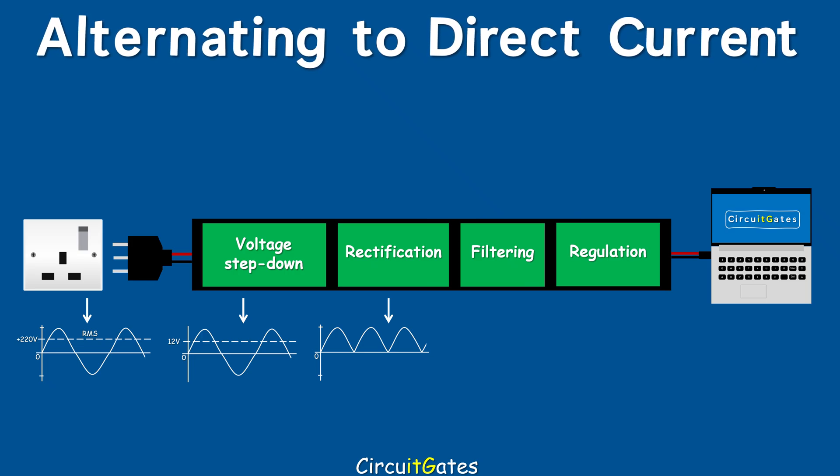The third stage is filtering. At filtering, we are reducing the fluctuations in the rectified voltage and producing a relatively smooth DC voltage. The last stage is voltage regulation. At voltage regulation, we are producing a steady, smooth voltage which then powers the load.